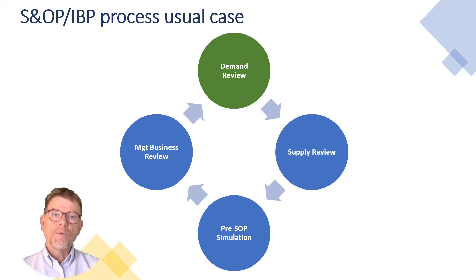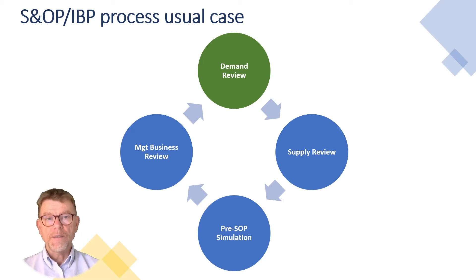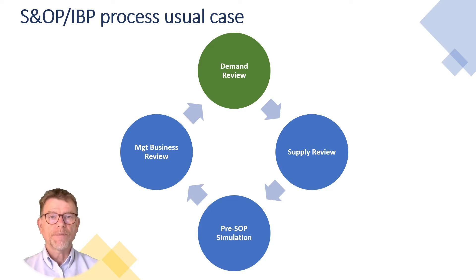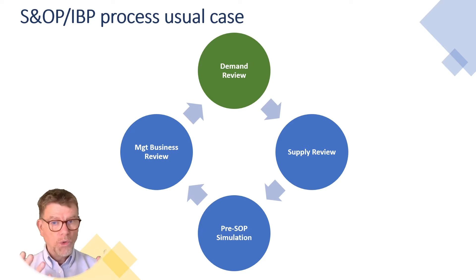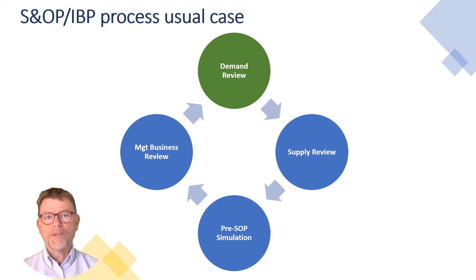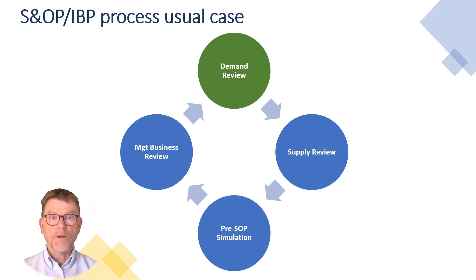In reality, most of the SNOP IBP processes I've seen in my career are made of four steps: demand review, supply review, pre-SNOP, and management business review meeting — where the supply review covers capacity, supply, and inventory, and there is no NPI. Shall you follow a four-step SNOP? It's better than nothing. But if you want to go to the full extent, you are welcome.